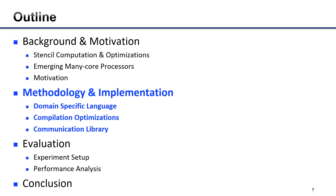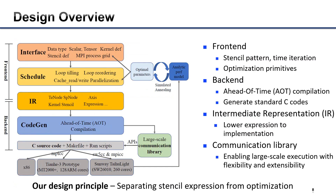I will now present our methodology and implementation. The MSC stencil DSL contains three parts: front-end, back-end, and the communication library. The front-end takes the definition of a stencil computation as input, including the stencil pattern, time iteration, and optimization primitives. The back-end adopts ahead-of-time compilation to generate standard C codes to avoid runtime overhead. The front-end and back-end are connected by the intermediate representation IR, which lowers the stencil expression to implementation. The communication library allows MSC to invoke corresponding APIs to enable large-scale execution automatically. Our design principle is separating stencil expression from optimization.